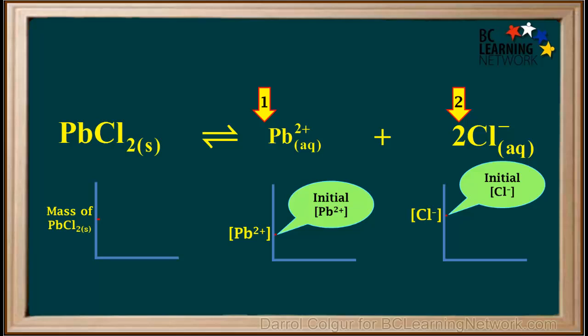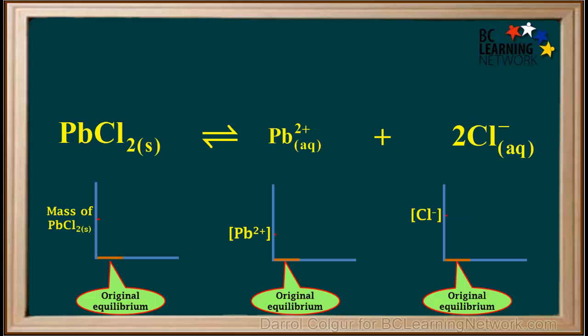In a saturated PbCl₂ solution, the concentration of Cl⁻ is twice the concentration of Pb²⁺, because the coefficient ratio in the equation is 2 to 1. If the original equilibrium is left undisturbed, the mass of the solid and the concentrations of the ions remain constant.